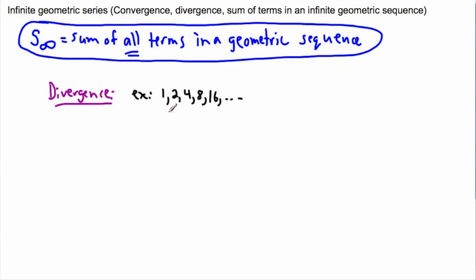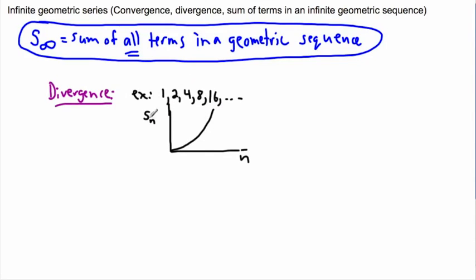If we graph n versus the sum of the first n values — as n gets really large, the sum grows larger, and in fact it grows larger faster. It's exponential. When we say it diverges, we mean that Sn does not reach some equilibrium value.